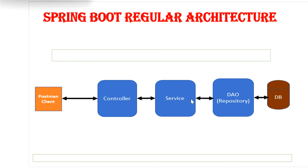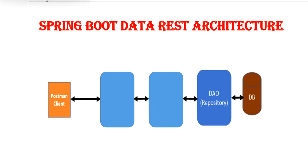With Spring Data JPA, if you want to create CRUD operations you still need controller and service classes. But with Spring Data REST, you don't need to create a controller or service layer. You just declare your entity class and DAO layer, and the client will directly communicate with the DAO layer and the database. It also supports pagination and sorting operations.